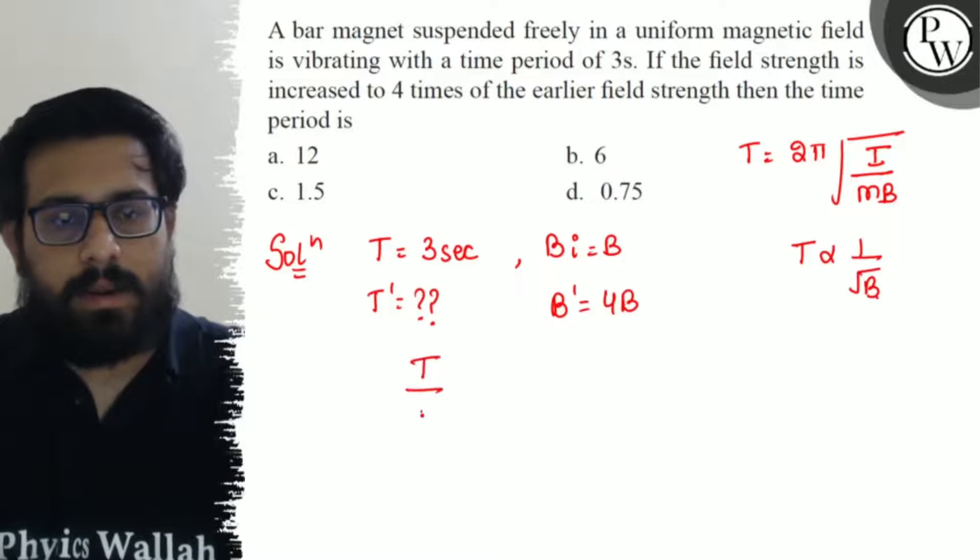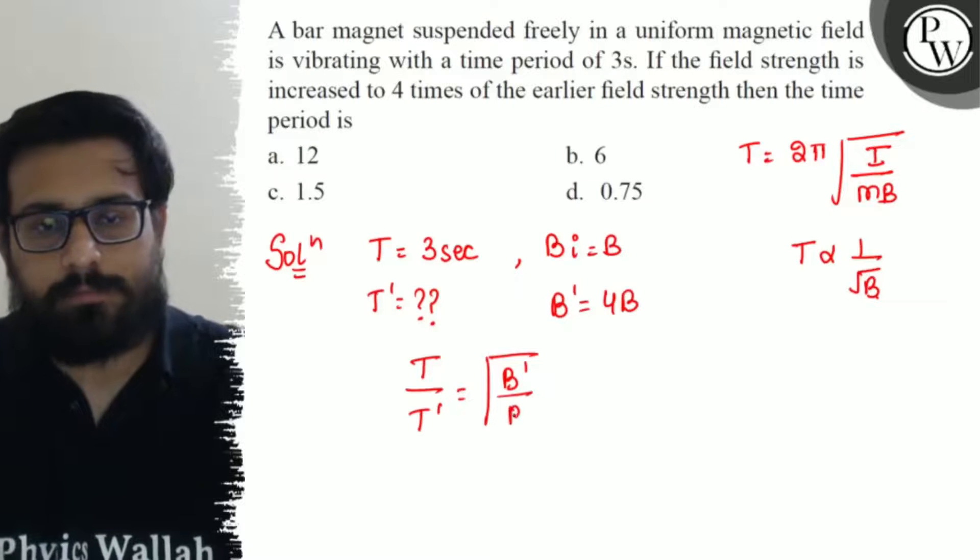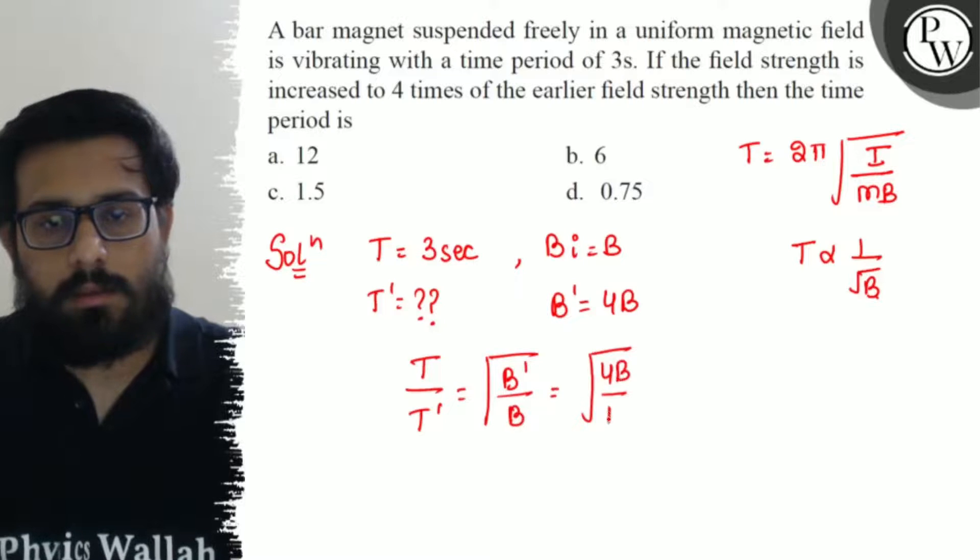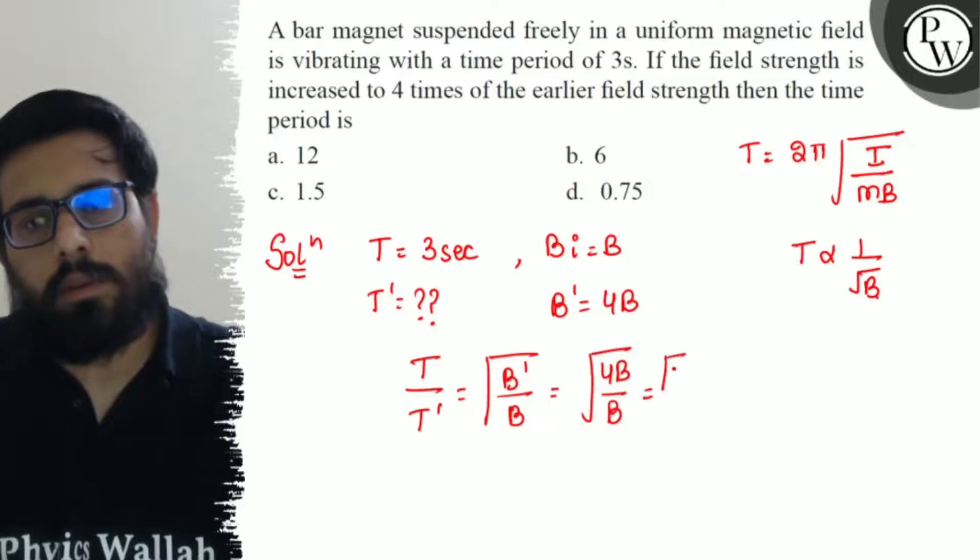So here we have T divided by T' equals under root of B' divided by B, which equals under root of 4B divided by B. Under root of 4 comes out to be 2.